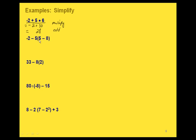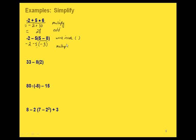Let's look at this one. We have a subtraction, a multiplication, and a set of parentheses with a subtraction inside. So our first step is to simplify inside the parentheses. If we take 5 minus 8, we end up with a negative 3. Now we have a subtraction and a multiplication, so our next step is to multiply: 5 times negative 3 gives us negative 15.